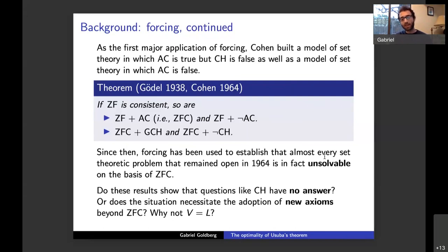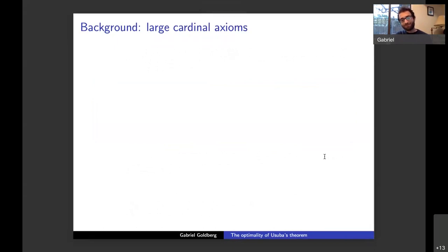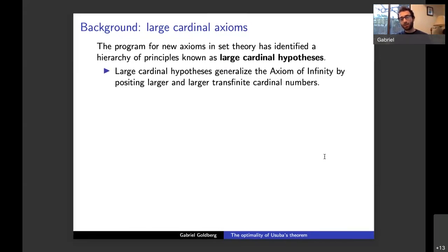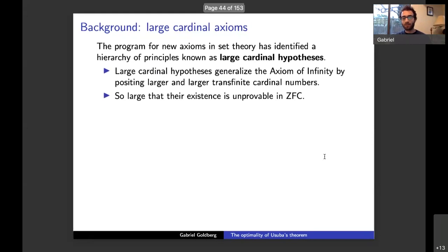The philosophical question this raises is whether these results show CH has no answer whatsoever. Cohen took the stance that forcing gives the definitive answer: there is no answer. But it also seems reasonable to think these results just show ZFC is a weak theory — it doesn't determine these properties, but there's no reason to believe there are no true axioms that determine whether CH is true.